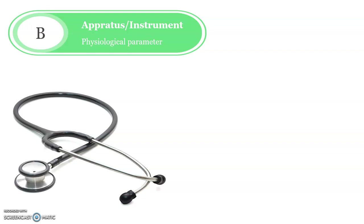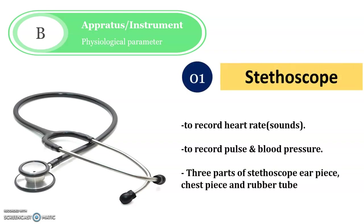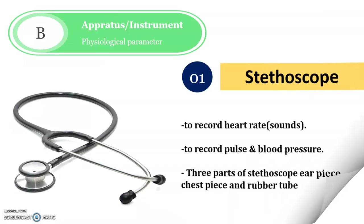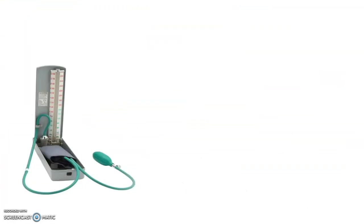Now let us discuss Part B — apparatus and instruments used to check physiological parameters. The first one is the stethoscope. The stethoscope is used to record heart rate, pulse rate, and blood pressure. It is divided into three parts: the earpiece, the chest piece, and the rubber tubing. This is the first instrument used to check physiological parameters.